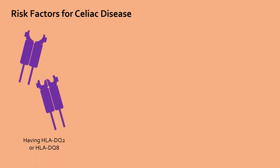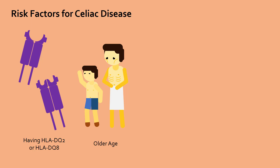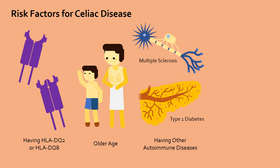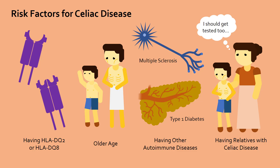As mentioned earlier, having HLA-DQ2 or DQ8 puts you at a much higher risk of developing celiac disease and explains why celiac disease rates are different for different racial groups. Celiac disease affects all ages but is more commonly diagnosed in older people. It is also more common if you are suffering from an autoimmune disorder such as type 1 diabetes or multiple sclerosis. Finally, since MHC class II molecules are inherited, if your parents, siblings, or children have celiac disease, you are at a 10 times higher risk of also having celiac disease. Please talk to your physician to get tested if you are experiencing celiac disease symptoms or if your family members have celiac disease.